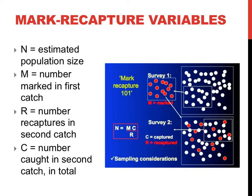Again, the idea behind the Mark Recapture technique is quite simple. If you mark a significant number of individuals in a population and release them, the fraction that you recapture in your second sample can be used to extrapolate the size of your entire population.